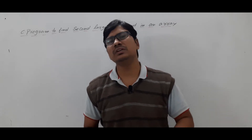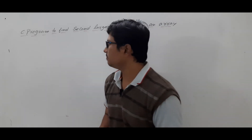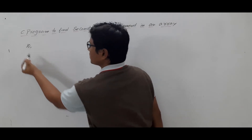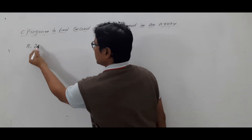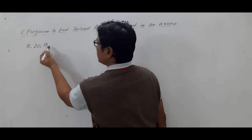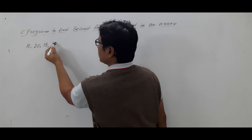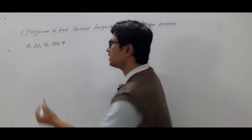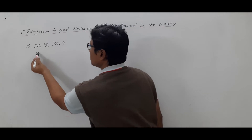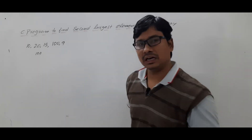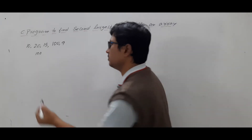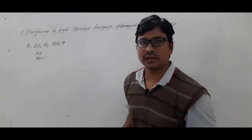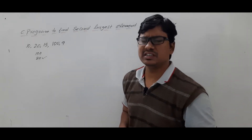Now let me discuss what is the second largest element in an array. Let's take an array with elements such as 10, 20, 15, 100, 9. What is the largest element? 100 is the largest element. But I don't want the largest element — I want the second largest element. 20 is the second largest element, and this is what I want as an output.